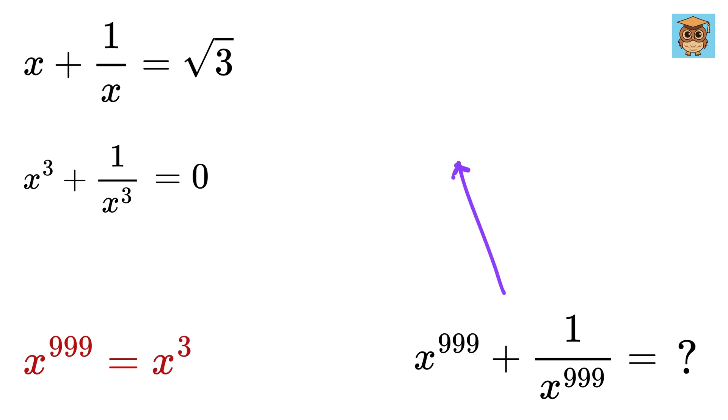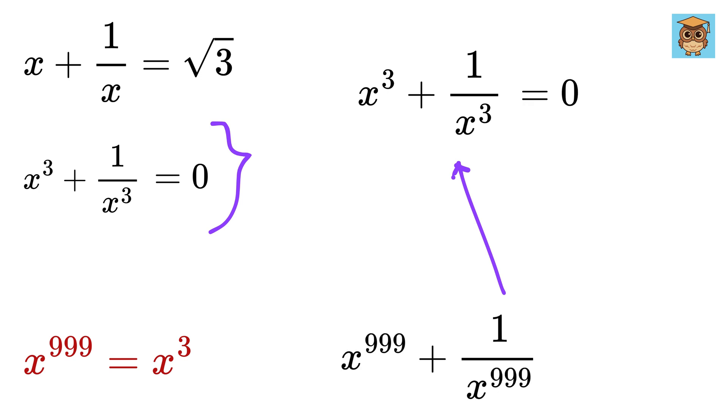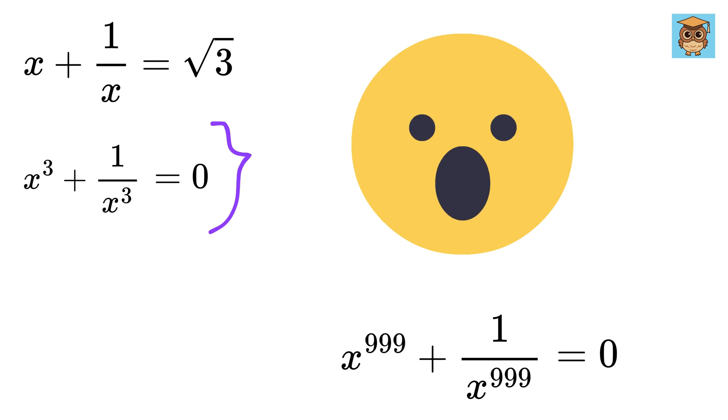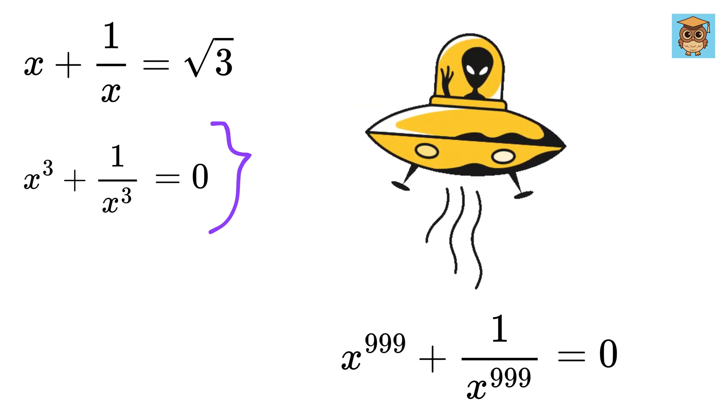Thus, this equation becomes x cube plus 1 over x cube, and we have already solved for that, which is equal to 0. Thus, x to the 999 plus 1 over x to the 999 equals 0. I am literally in shock right now. This was an out-of-this-world problem.